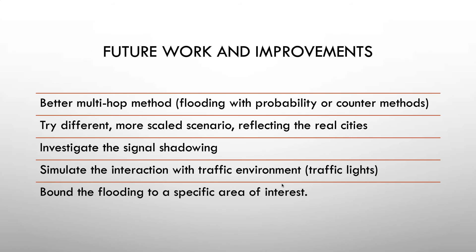Regarding future work and improvements, we think better multi-hop methods should be used: flooding with probability or counter methods, where you count the number of multi-hops and limit hops per node. Flooding with probability would mean each node floods the network with a specific probability — 100% probability equals standard flooding, but 50% probability would have much greater efficiency. Other improvements include trying more scaled scenarios reflecting real cities, since we currently have a maximum of 500 nodes while real cities have thousands or hundreds of thousands. We would also investigate signal shadowing, simulate interaction with the traffic environment, and bound the flooding to a specific area of interest.